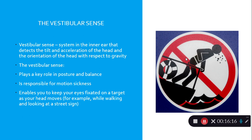The vestibular sense involves the system in your inner ear that detects the tilt, acceleration, and orientation of the head with respect to gravity. It plays a key role in posture and balance, and is responsible for motion sickness when your body and mind get confused. It also enables you to keep your eyes fixed on a target as your head moves — for example, reading a street sign while walking.